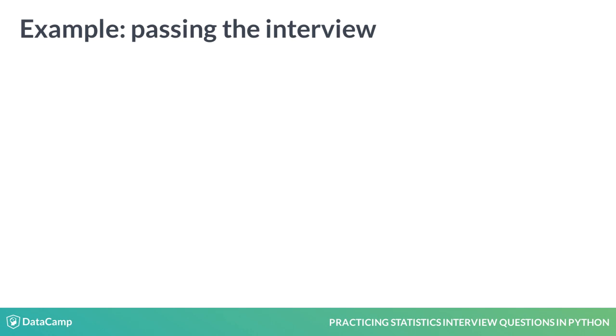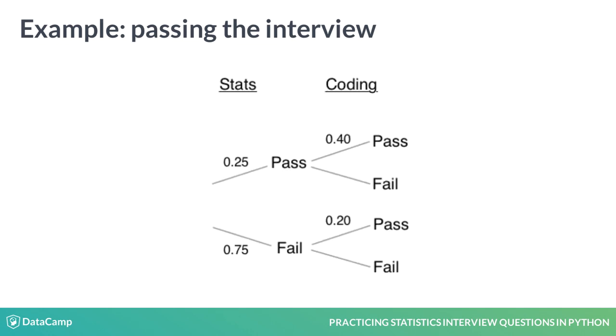Let's see what one of these interview questions might actually look like in practice, using both Bayes' theorem and tree diagrams. We're given some information regarding interview results for two separate stages shown above. We want to find the probability that the applicant passes the stats interview, given that he or she passes the coding interview as well. First, let's draw out the tree diagram and go from there.